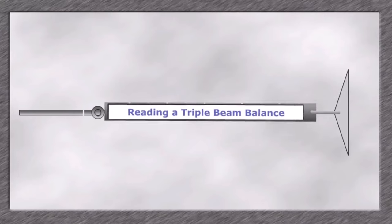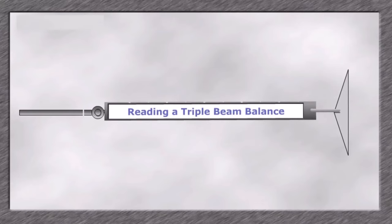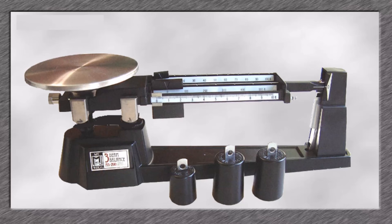Welcome to this activity on reading a triple beam balance. A triple beam balance measures the mass of an object. The unit of measurement is a gram.